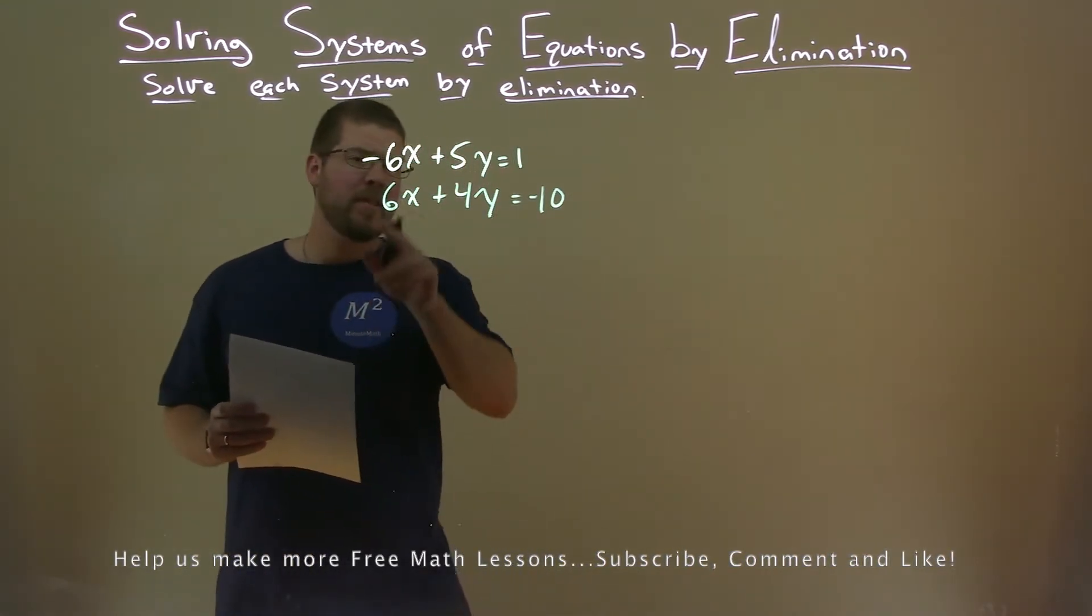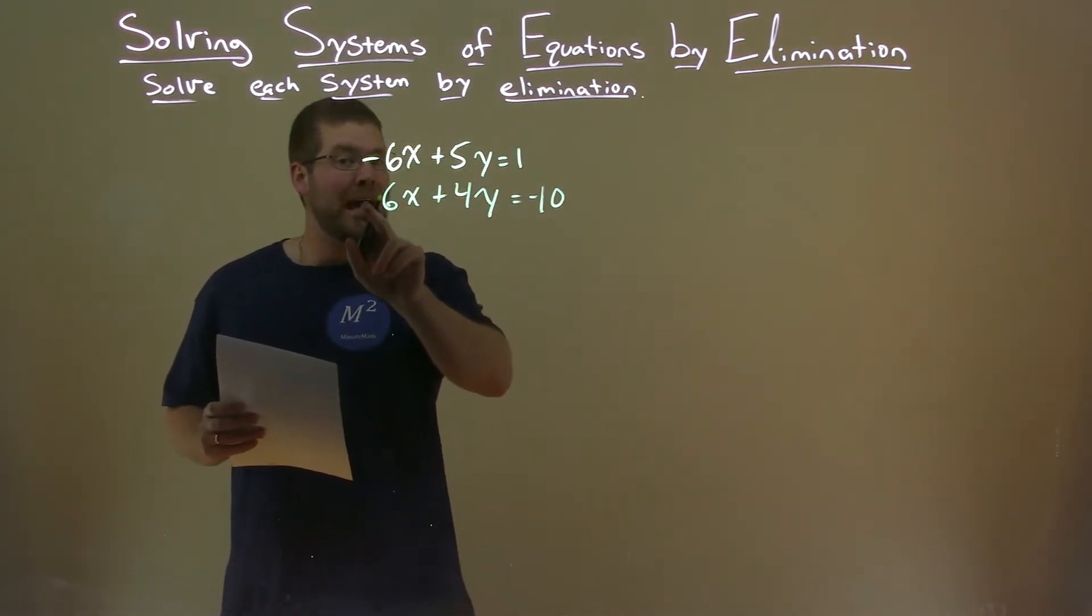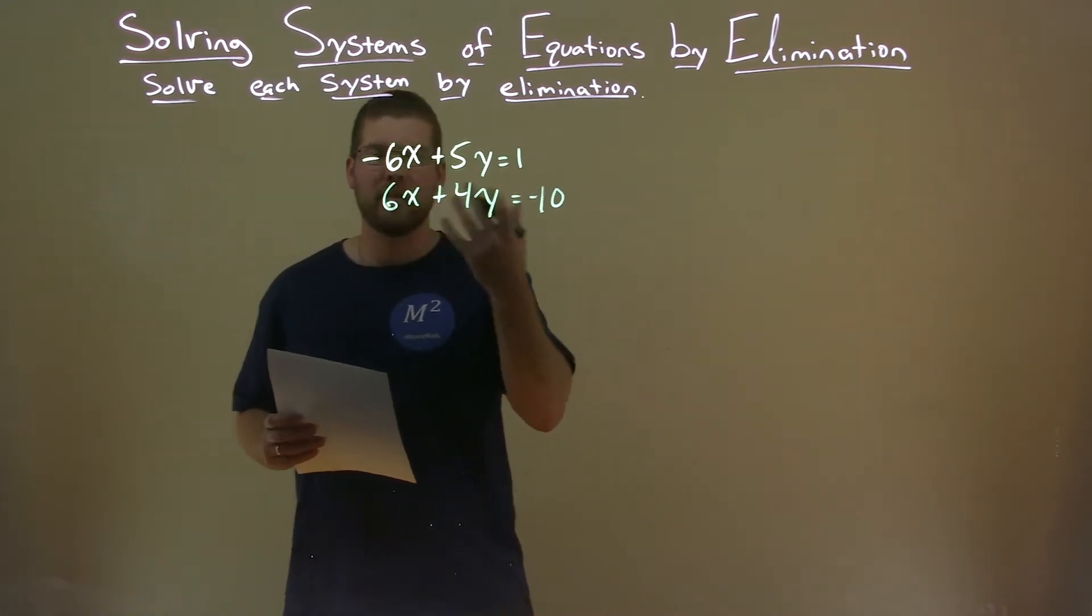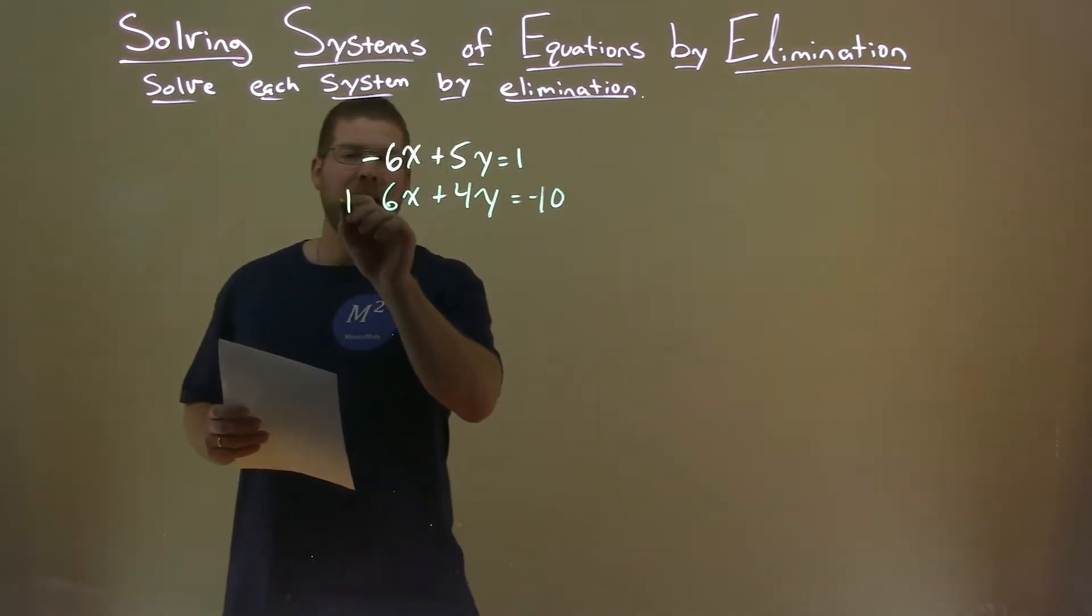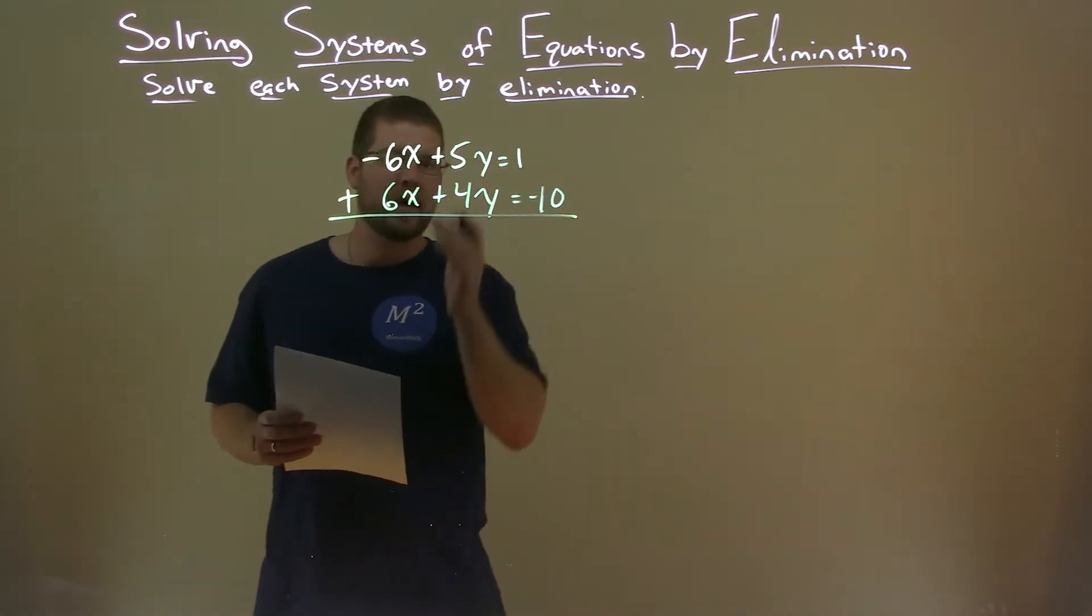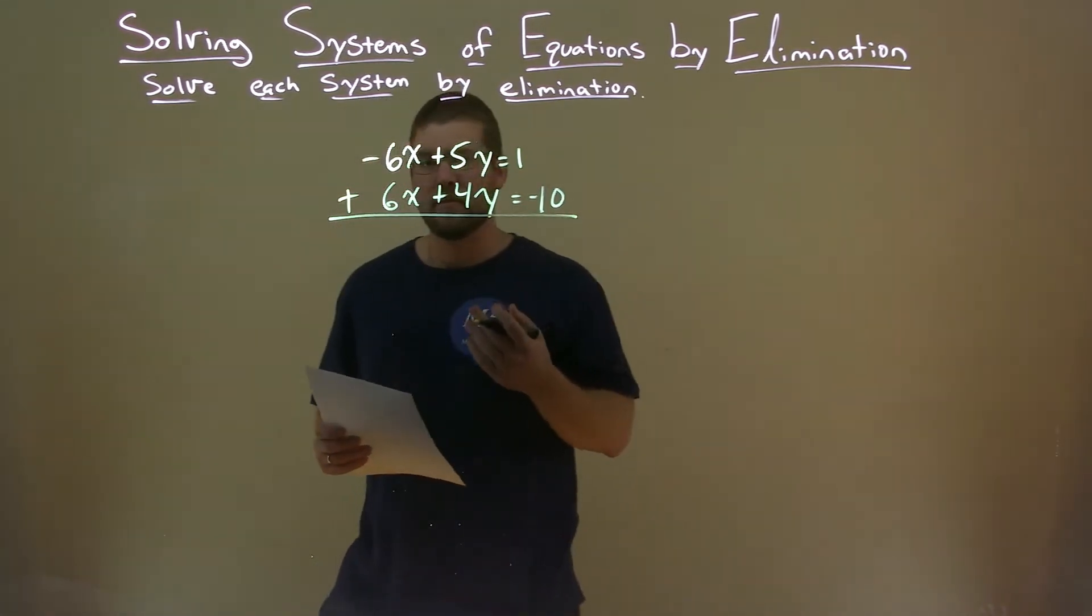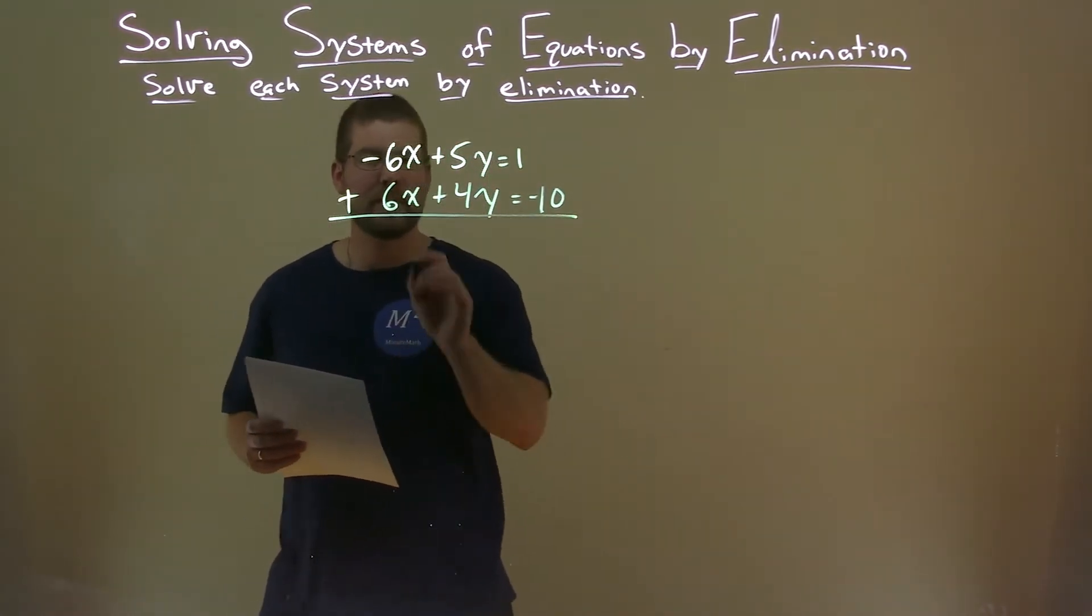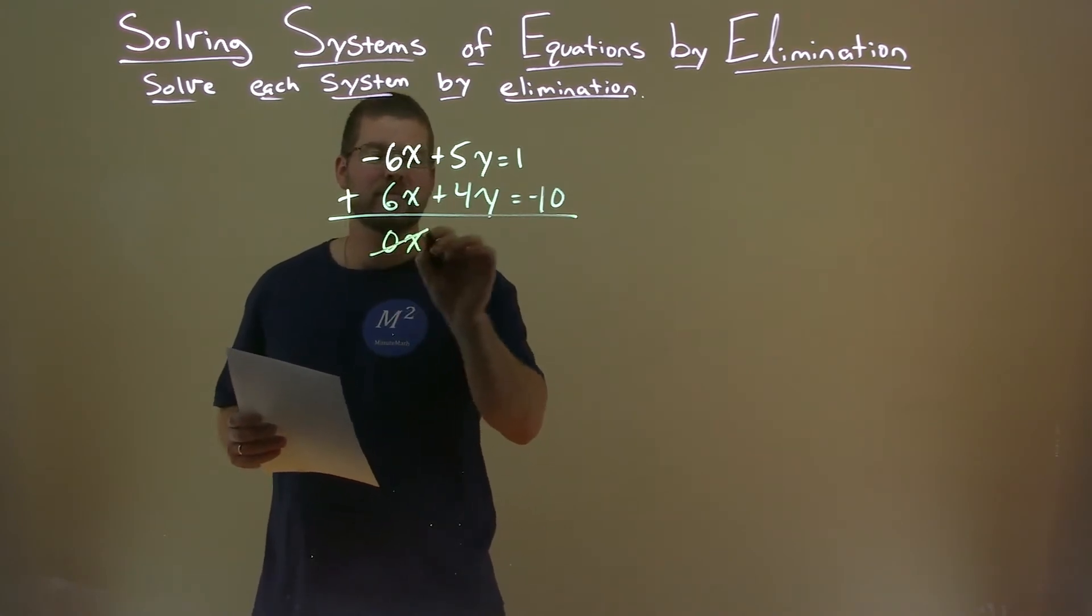To do that, we identify something that we can add together that will eliminate the variable. Here I see is x. If I add these two equations together, the x variables will cancel. Negative 6x plus 6x is 0x. Don't need to write that.